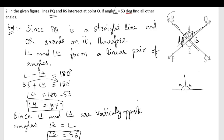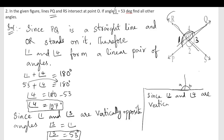We will use the same property of vertically opposite angles for angle two and angle four. Since angle two and angle four are vertically opposite angles, angle four equals angle two. Since angle four is 127 degrees, angle two is also 127 degrees.